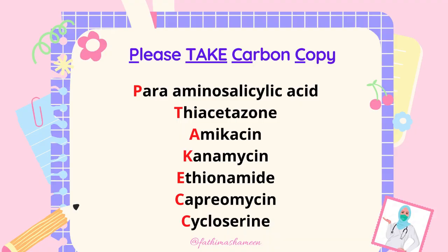Similarly, second-line drugs for treating TB can be remembered using the mnemonic 'Please Take Carbon Copy.' P stands for para-aminosalicylic acid, T for thiacetazone, A for amikacin, K for kanamycin, E for ethionamide, then 'Carbon Copy' — CA stands for capreomycin, and the last C stands for cycloserine. This is how you use mnemonics or acronyms to remember drug names — you can make your own to suit your learning.